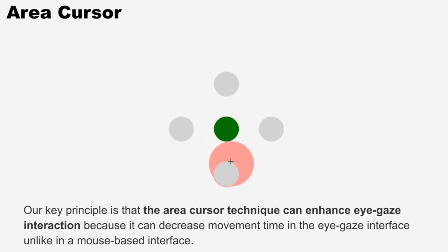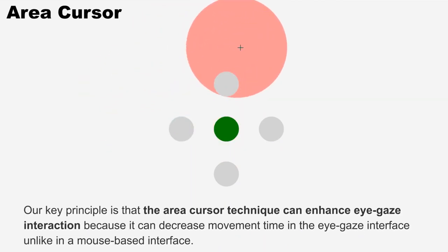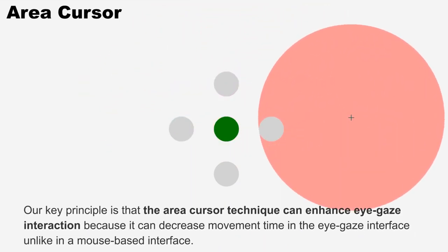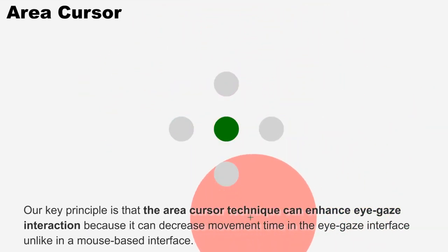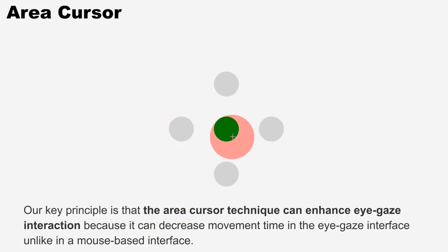Our key principle is that the area cursor technique can enhance eye gaze interaction because it can decrease movement time in the eye gaze interface, unlike in a mouse-based interface.